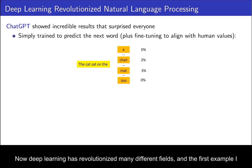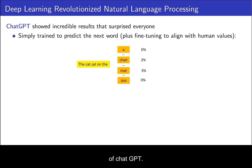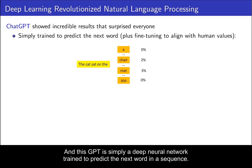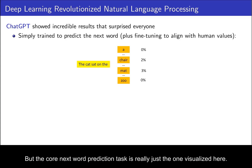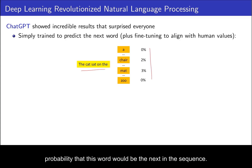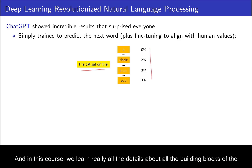Deep learning has revolutionized many different fields and the first example simply has to be natural language processing and the incredible success story of ChatGPT. At the core of ChatGPT is GPT — more precisely a numbered version such as GPT 3.5 or GPT 4 — and this GPT is simply a deep neural network trained to predict the next word in a sequence. ChatGPT then also does some fine-tuning to align with human values, which we'll discuss later in the course. The core next-word prediction task is really just the one visualized here: given a prefix of a sentence, predict the probability that each word would be the next in the sequence. Technically you actually make these predictions for subword phrases, but that's a detail. In this course we learn all the details about the building blocks of deep learning that you need for this.